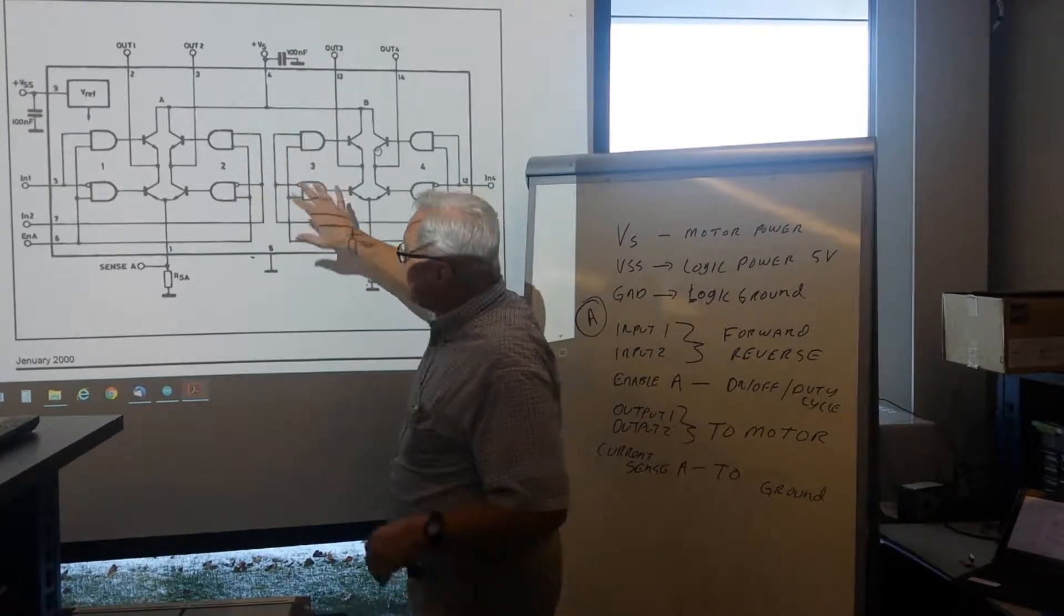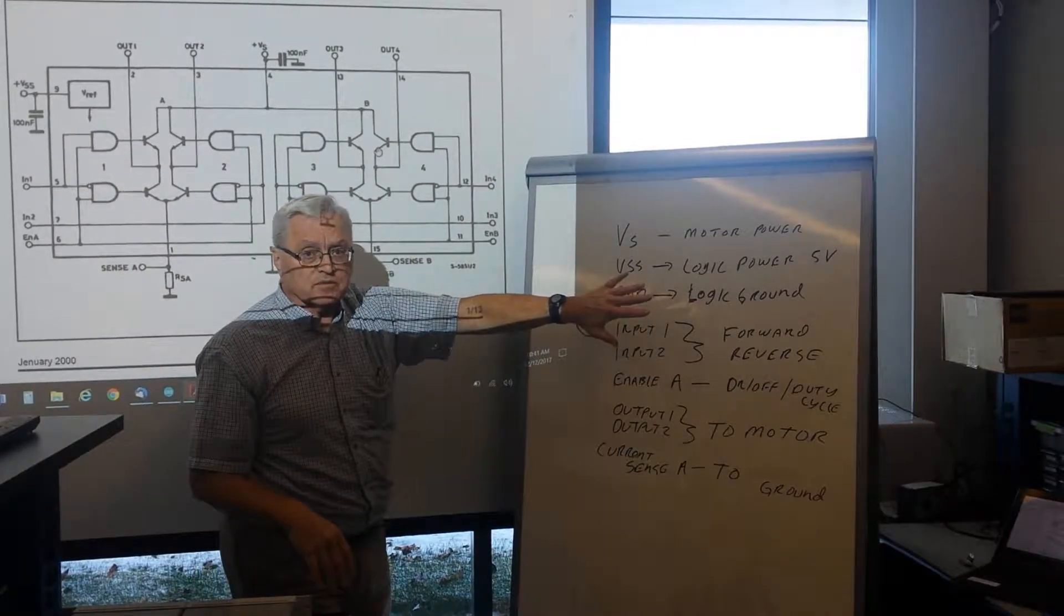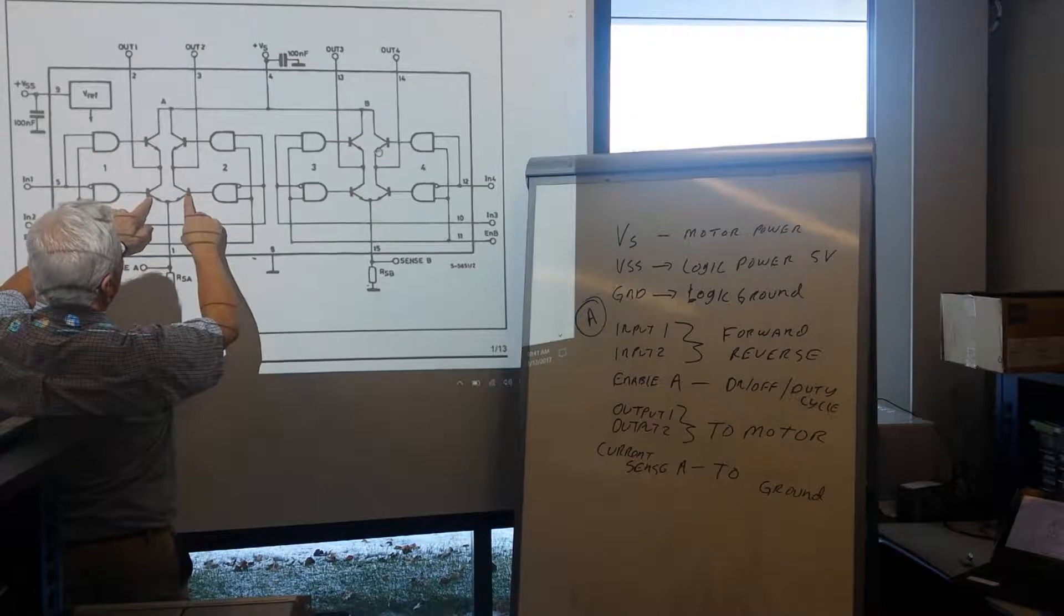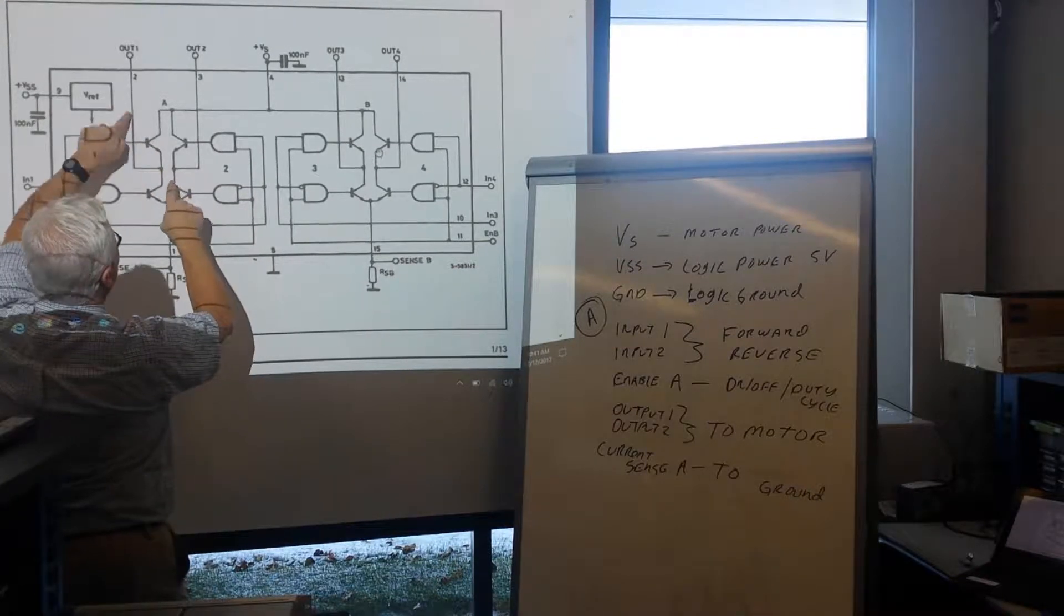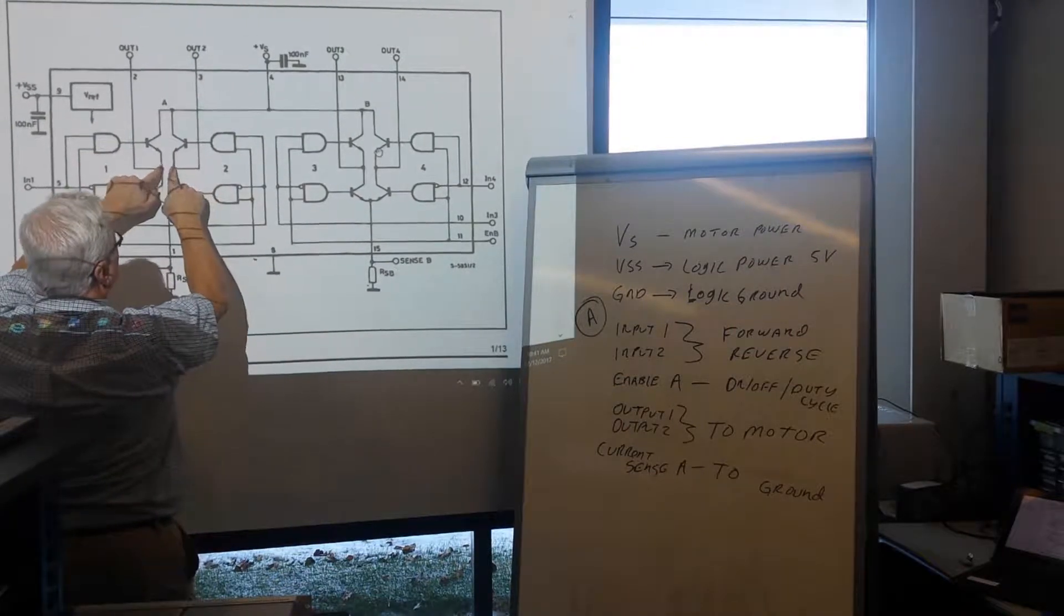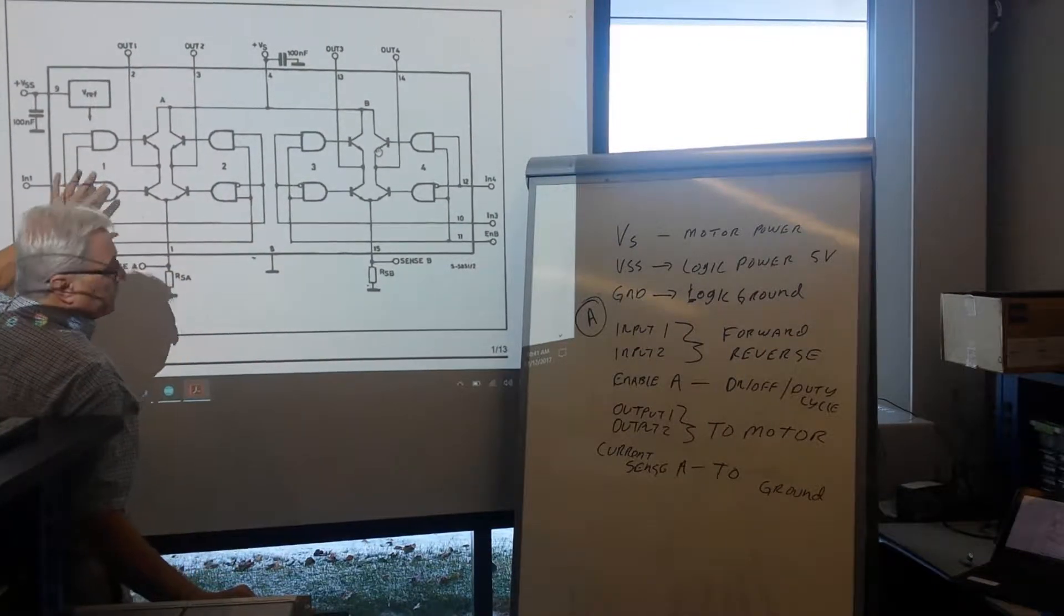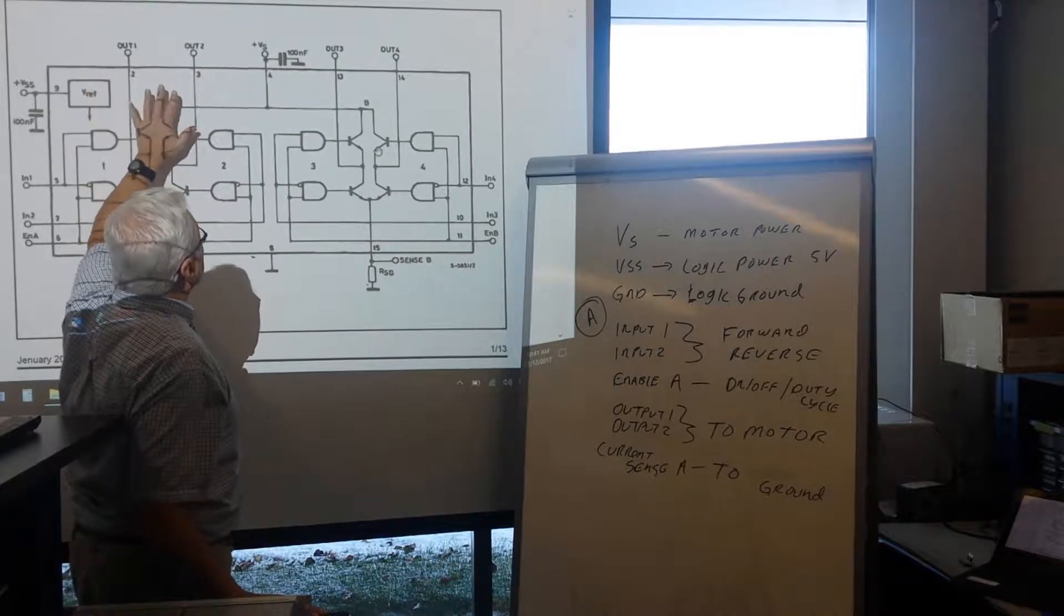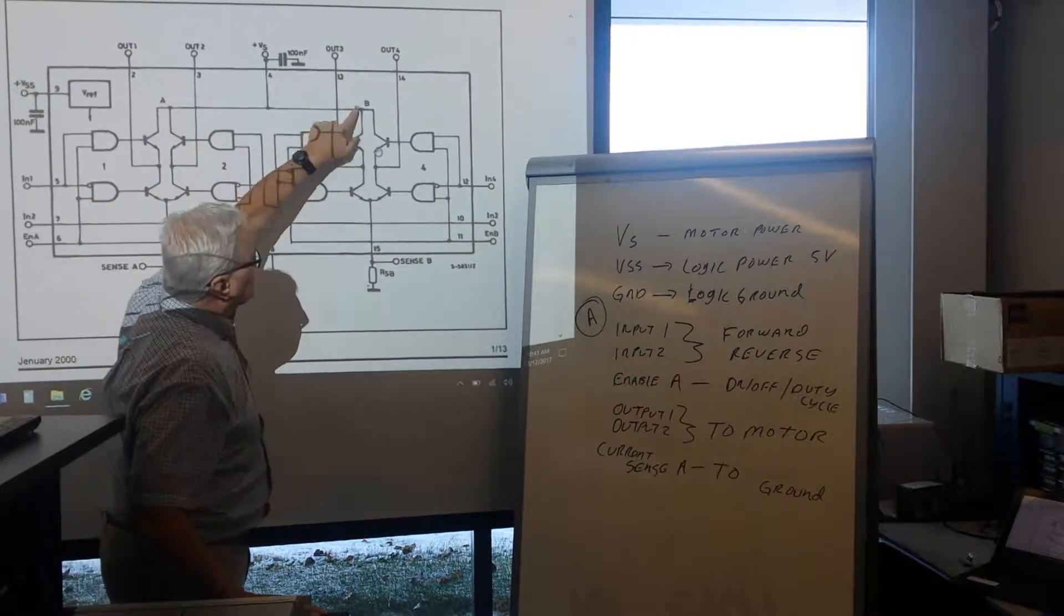So this is the block diagram from the datasheet and what this has is two complete H-bridges, like I had drawn on the board before, A and B. And instead of the switches, you see they have the transistor symbols here. So if we turn these two transistors on, we run current to our motor, output one, output two, and if we turn those two on, we run power to the motor in the opposite direction. So output one, output two are the connections directly to the motor. And, well, let's walk down all the connections here.